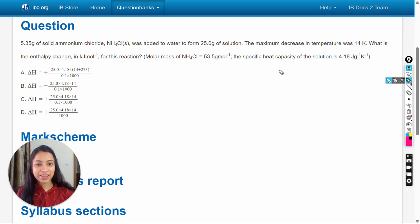Hello dear students, here in this video we are going to solve this question from the chapter thermochemistry. The question is: 5.35 gram of solid ammonium chloride NH4Cl was added to water to form 25 gram of solution. The maximum decrease in temperature was 14 Kelvin. What is the enthalpy change in kilojoule per mole for this reaction?